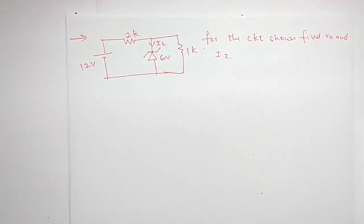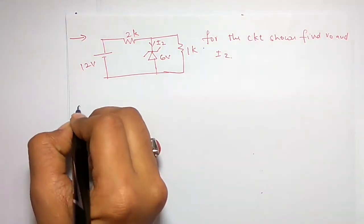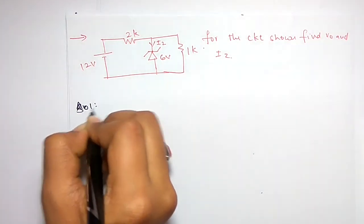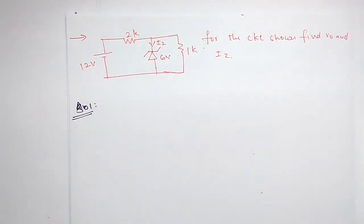In this video, we are going to see some numericals based on the voltage regulator circuits. For the given circuit, you have to find out the output voltage and the zener current. The first and foremost thing you have to do before doing a solution is first check whether the zener is in breakdown region or not. If the zener is in breakdown region, then only it acts as a regulator, then only you can find the output.